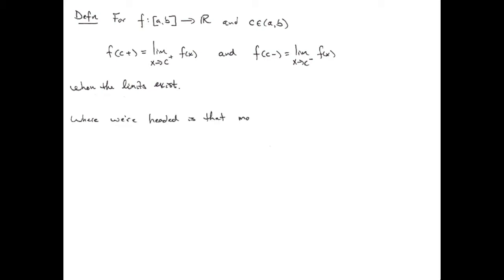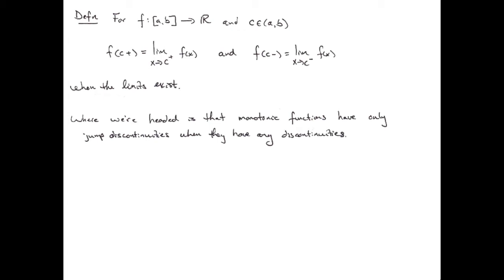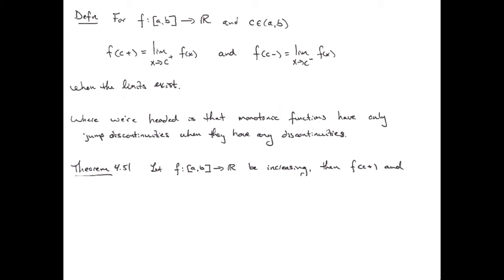The key idea is that for monotonic functions, we can't just have any kind of discontinuity — the only discontinuities allowed are jump discontinuities. That's the content of Theorem 4.51. If we have a real-valued increasing function F on a closed interval A to B, then F of C-plus and F of C-minus both exist for all C in the interior of the interval.